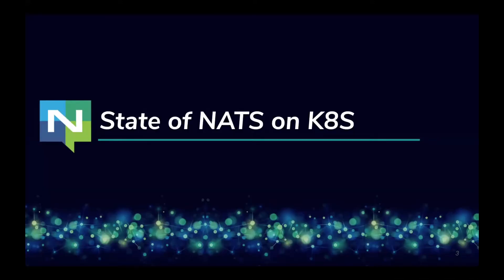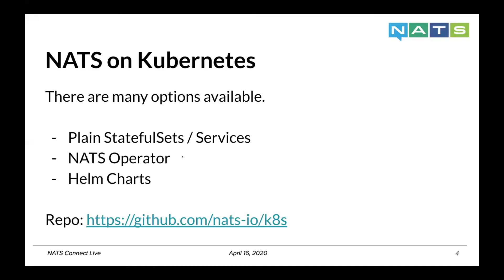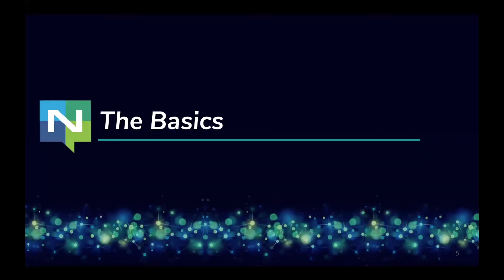I just want to give an update on the current state of NATS on Kubernetes. There are many options available for deploying NATS. Deploying NATS in Kubernetes is actually fairly straightforward. You can use stateful sets and services, but we also maintain a NATS operator with custom resource definitions. Following feedback from users, we also started maintaining Helm charts. You can find all of these artifacts on the nats.io Kubernetes repository.